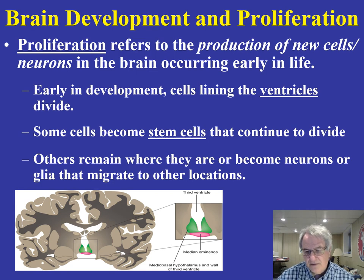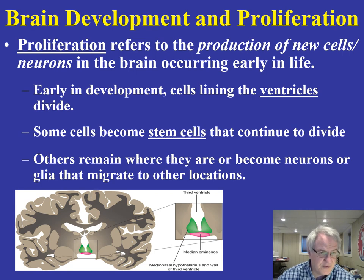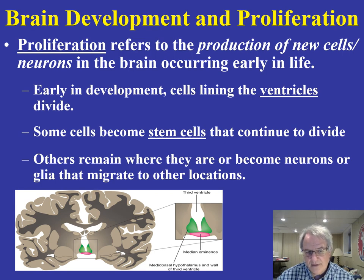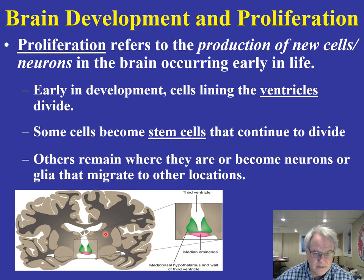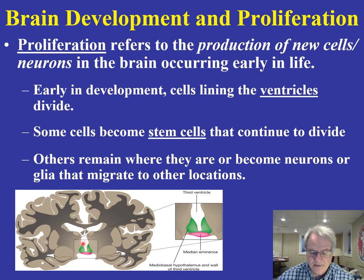Proliferation refers to new cells being formed — new neurons. This occurs during early life, a lot of it in the cells lining the ventricles. Stem cells are dividing and finding new locations. This proliferation process — the production of new cells — is obviously a very important process.